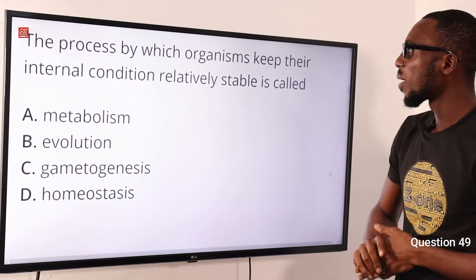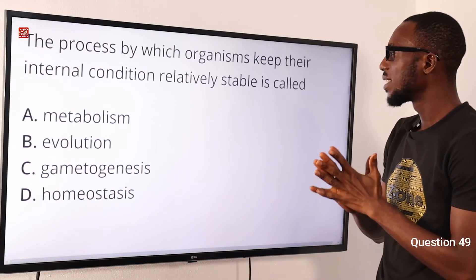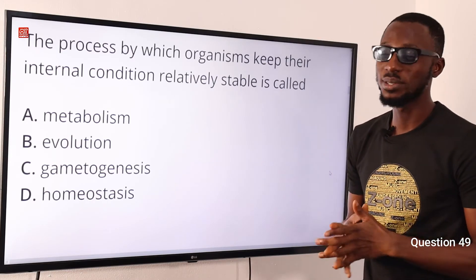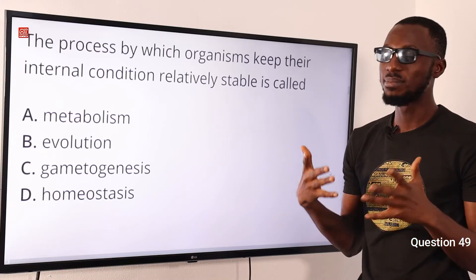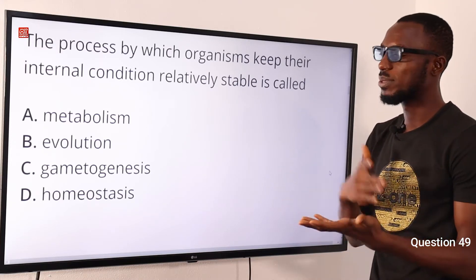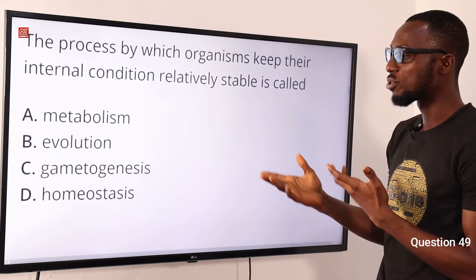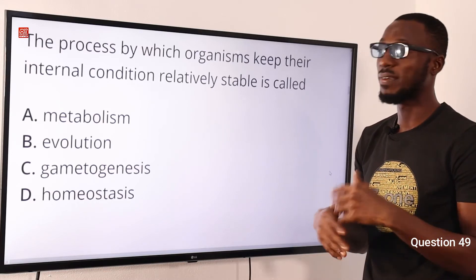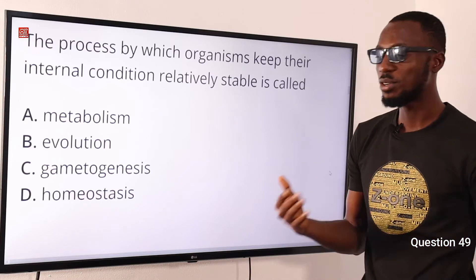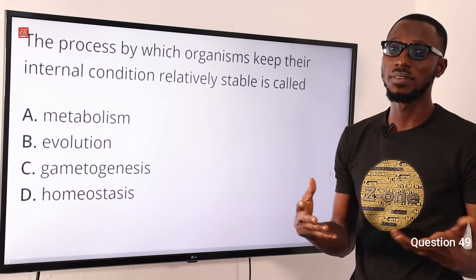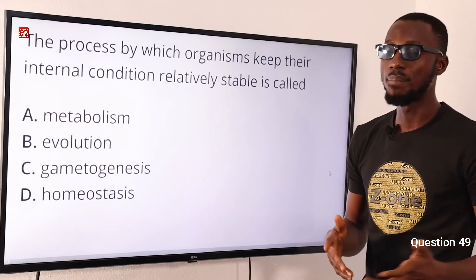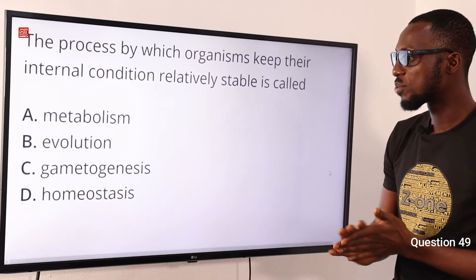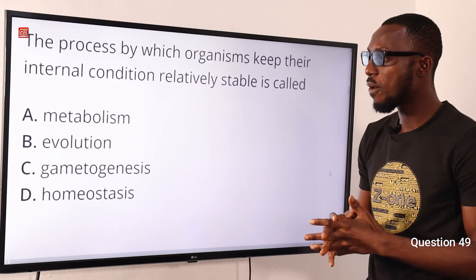Question 49. The process by which organisms keep their internal condition relatively stable is called what? Metabolism refers to chemical reactions within an organism to sustain life — including catabolism and anabolism. Evolution involves heritable changes in characteristics over time passed from generation to generation. Gametogenesis is the formation of gametes through meiosis — spermatozoa and egg cells. So the correct option is option D for homeostasis.